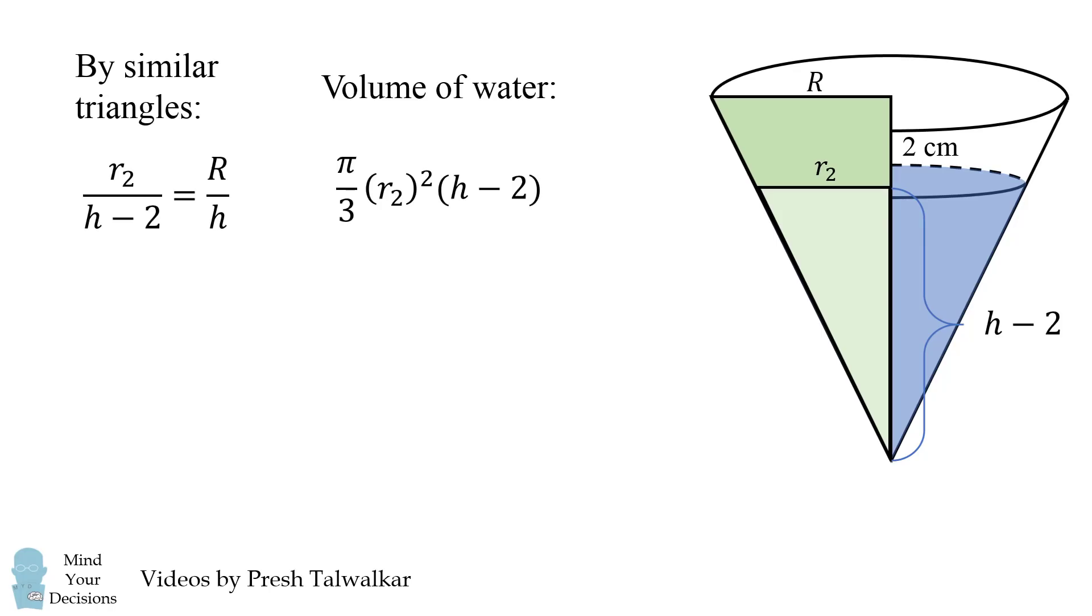We have r2 over h minus 2 is equal to r over h. This means r2 is equal to h minus 2, the quantity multiplied by r all over h. So we substitute that in and then we simplify this to get the volume of water in this cone is pi over 3 times r squared times the quantity h minus 2 cubed all over h squared.